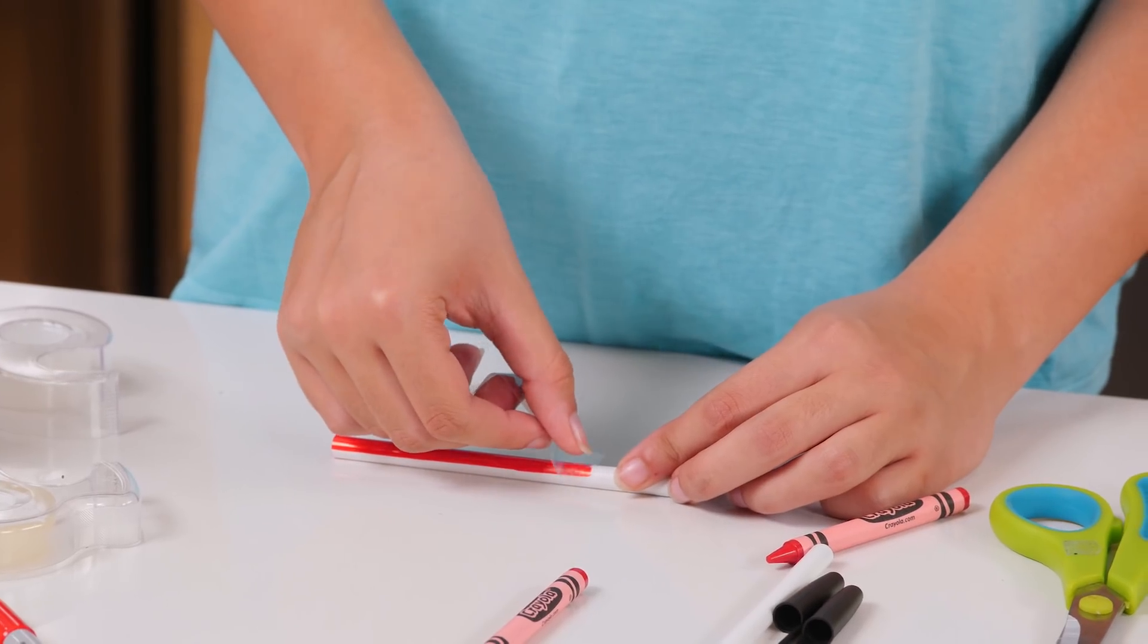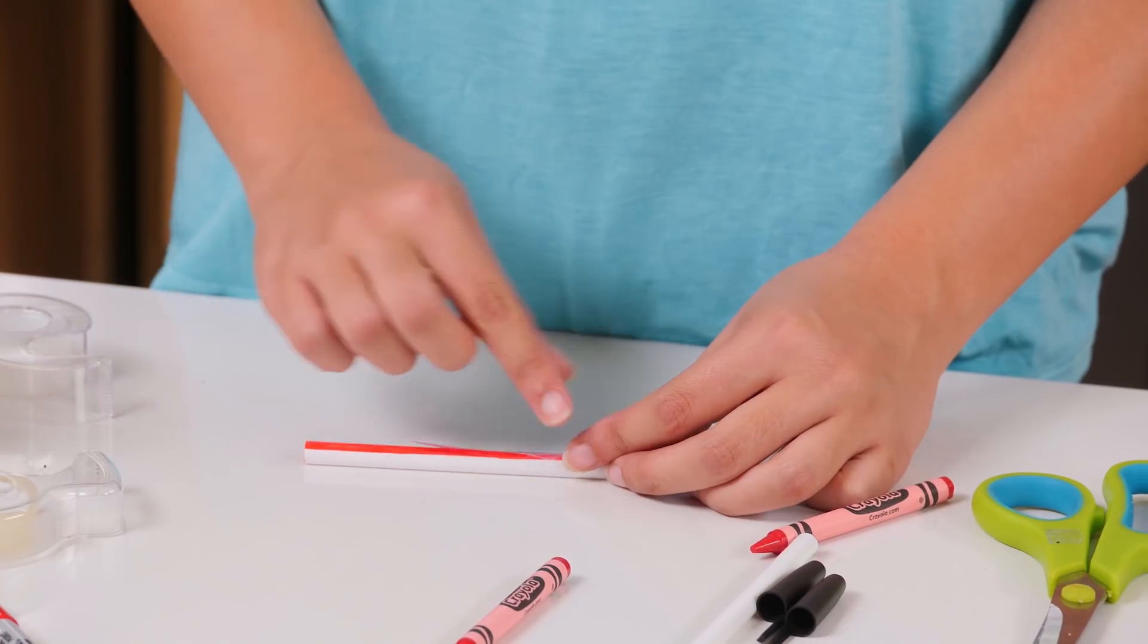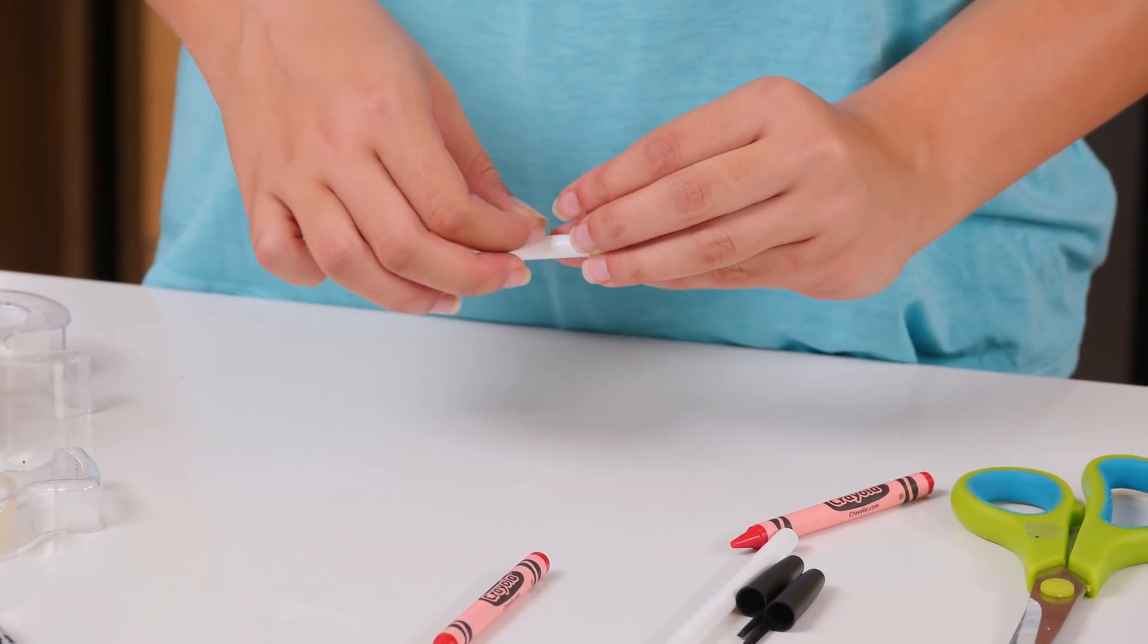Now, cover the red with clear tape. Next, remove the wrapper on your red crayon.